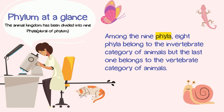First of all, phyla is the plural form of phylum. When you are talking about classification, we have the living world divided into kingdoms. We have the details and characteristics of the kingdom, family, and species. If you are talking about this division, we will have a lot of classes, but we will concentrate on the phyla.